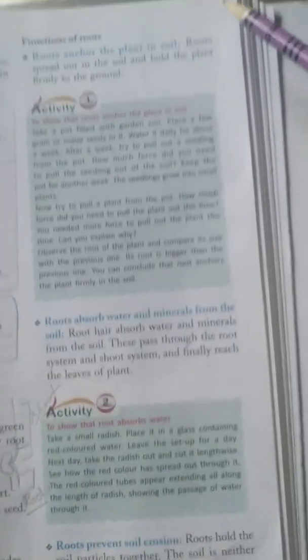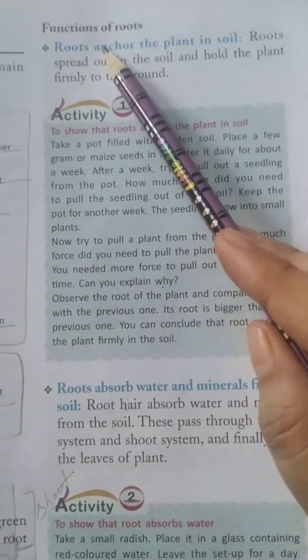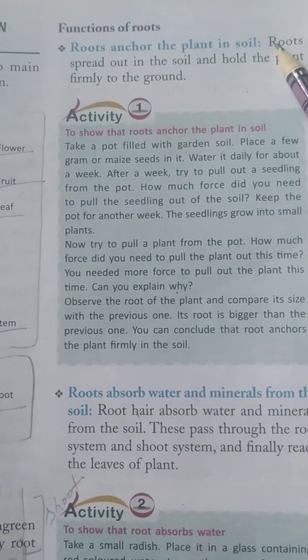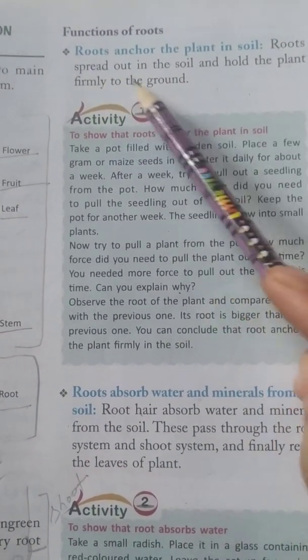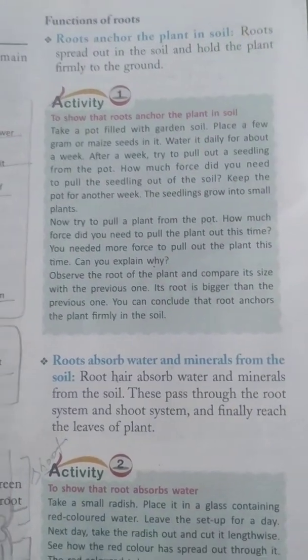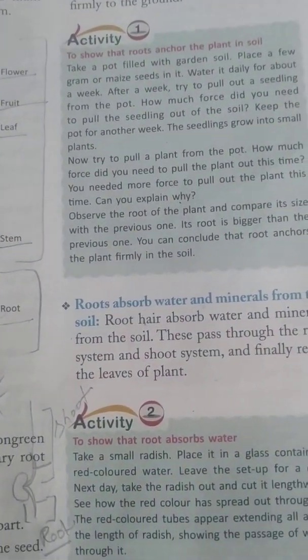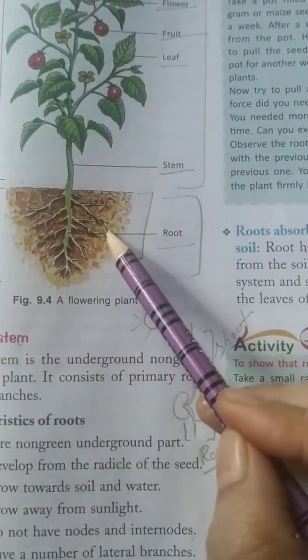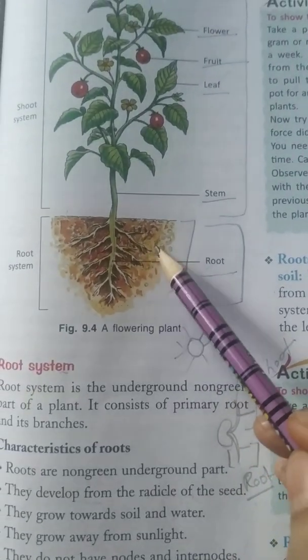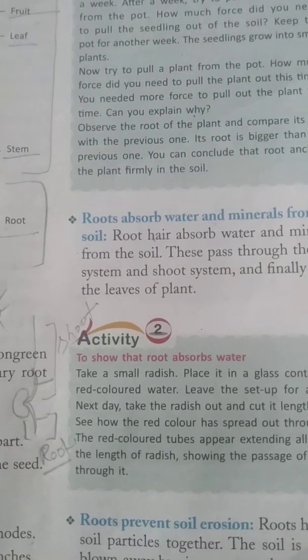Now we are going to discuss the functions of roots. Roots anchor the plant in soil — they help the plant to hold firmly into the ground. Roots also absorb water and minerals from the soil. As you can see in the picture, these root hairs absorb water and minerals present in the soil, which are utilized by the plant for manufacturing food.